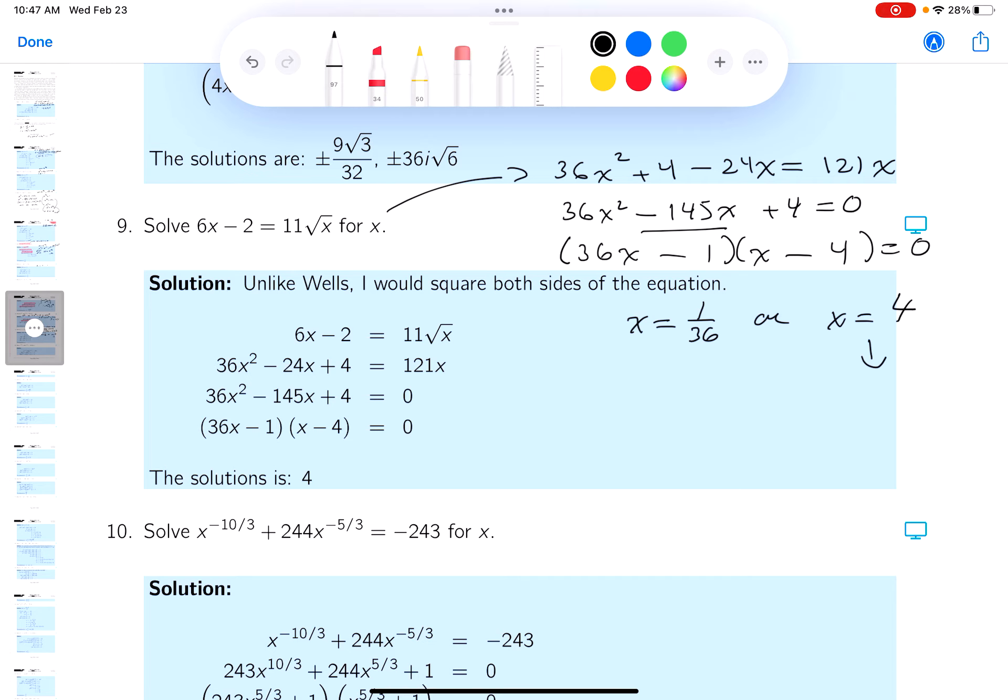Which one do you want to check first? Probably 4. So what do you get? 24 minus 2. That's pretty easy. And you get 11 and the square root of 4 would be 2. Well, that works beautifully. So this is a good answer.